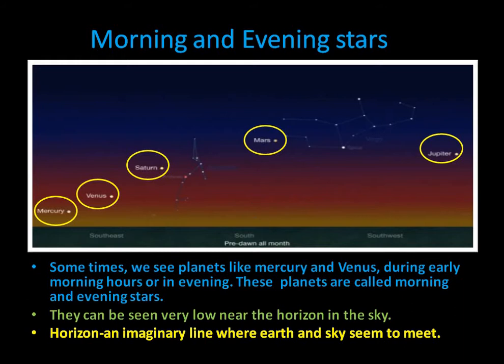The sky and the earth cannot actually meet, but they just seem to meet at a distance. This horizon is the line where we can see our morning and evening stars. When the conditions are good, then we can also see Saturn and Jupiter in the sky.